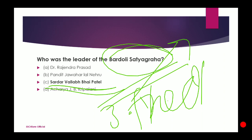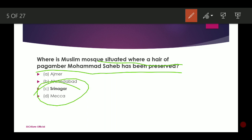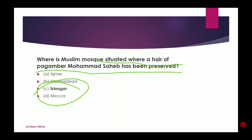Next question: Where is the Muslim mosque situated where a hair of Prophet Muhammad Sahab has been preserved? You can find it in Srinagar, the capital city of the Indian state Jammu and Kashmir.